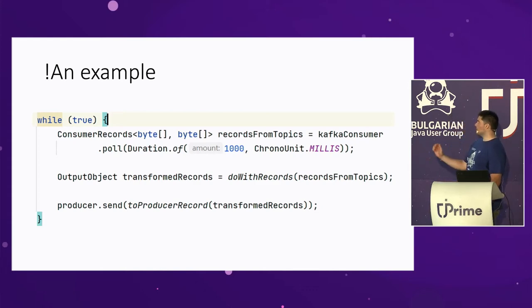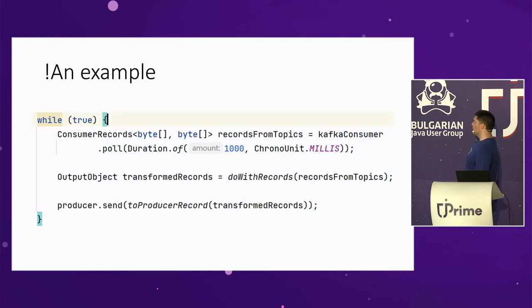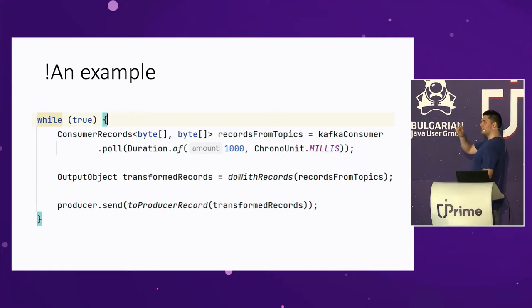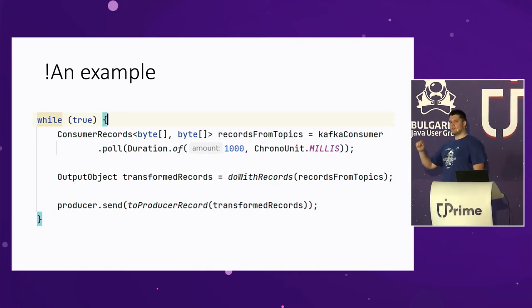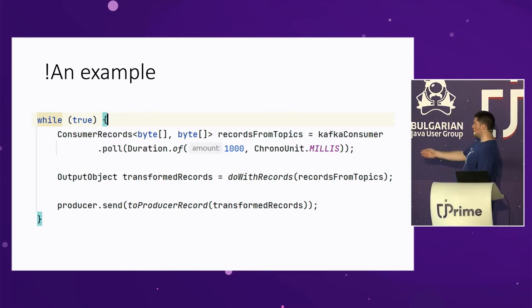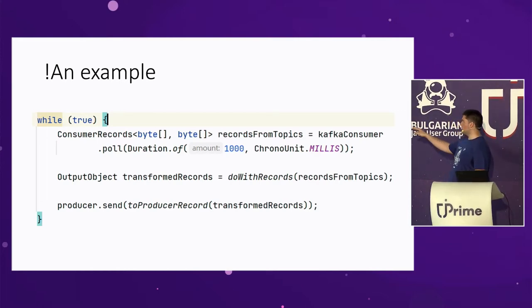Nobody is able to spot anything with this code? So we take something from an input topic via the good old poll method using a Kafka consumer. We do something with those records and then send output to another topic. You don't know the consumer's isolation level. You don't know when this consumer commits offsets — is it automatically? Are they committed manually inside doWithRecords? When does it happen? What do we actually do with those records? Are we calling a database? Are we calling a service?